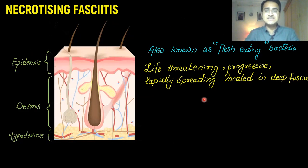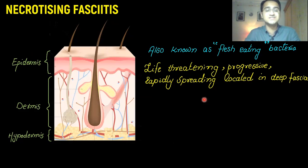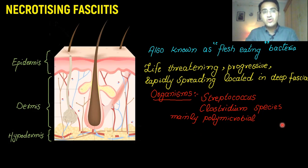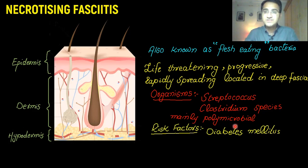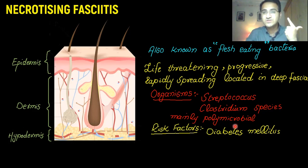Necrotizing fasciitis is a deadly condition. It is also called the flesh-eating disease, caused by flesh-eating bacteria, and it is life-threatening. Once it starts, it's progressive and it rapidly spreads in the deep fascia, destroying the tissues of the body. Organisms that cause necrotizing fasciitis are Streptococcus species, Clostridium species, and it is mainly found to be a polymicrobial condition. The most important risk factor is diabetes mellitus, as diabetic patients have a slow healing process and are immunosuppressed.